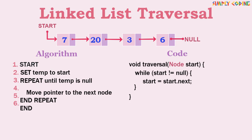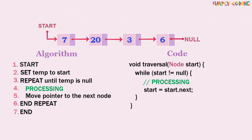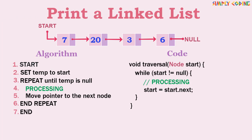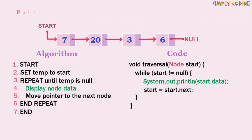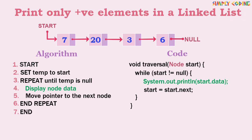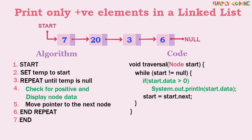In this loop we will add our processing as required by different programs. For example, if our program is to print the linked list, we just need to display the node data — so we add a System.out.println to print the node data. The program could also ask you to do selective print like printing all positive numbers in the list. Here we just need to add a check condition, then print — in code we add an if statement to check if data is greater than zero.